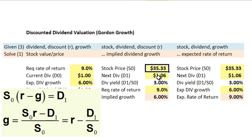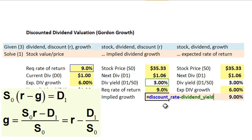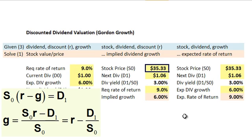In this case, the stock price is $35.33 — the price I observe. The next dividend is $1.06, which this time is an input. My dividend yield is $1.06 divided by $35.33, giving a dividend yield of 3%. My required rate of return is still 9%. Using Gordon Growth to solve for implied growth, I get 6% — simply my 9% discount rate minus my forward dividend yield of 3%. In other words, if I paid this price for the stock and this is the next dividend, it implies the dividend needs to grow at 6% infinitely.